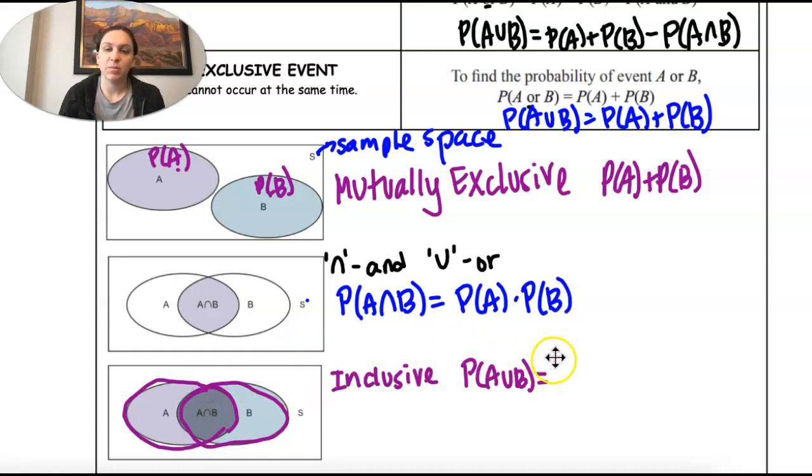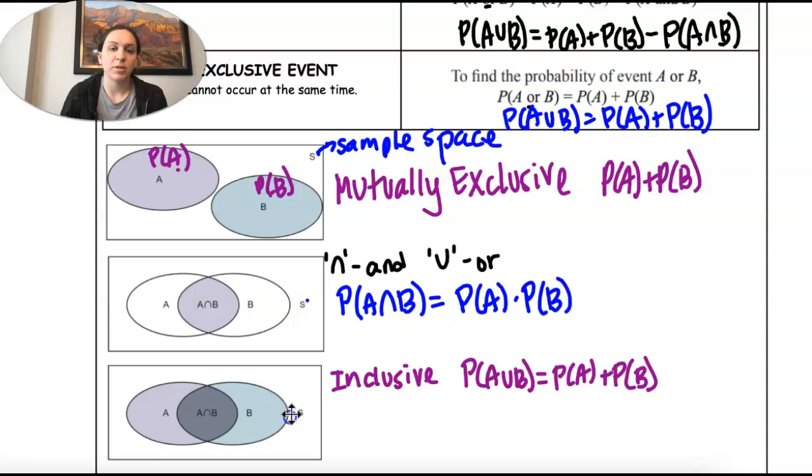So what we do is we take the probability of one and we add the probability of the other. And I'm going to retrace that again so you can see what happens. You can kind of see it in the picture but let me explain it. If I take the probability of A I include this whole thing even this part. And then if I take the probability of B I take the whole thing even this part. So notice that I counted the middle twice. So to take account of that we subtract just the middle.